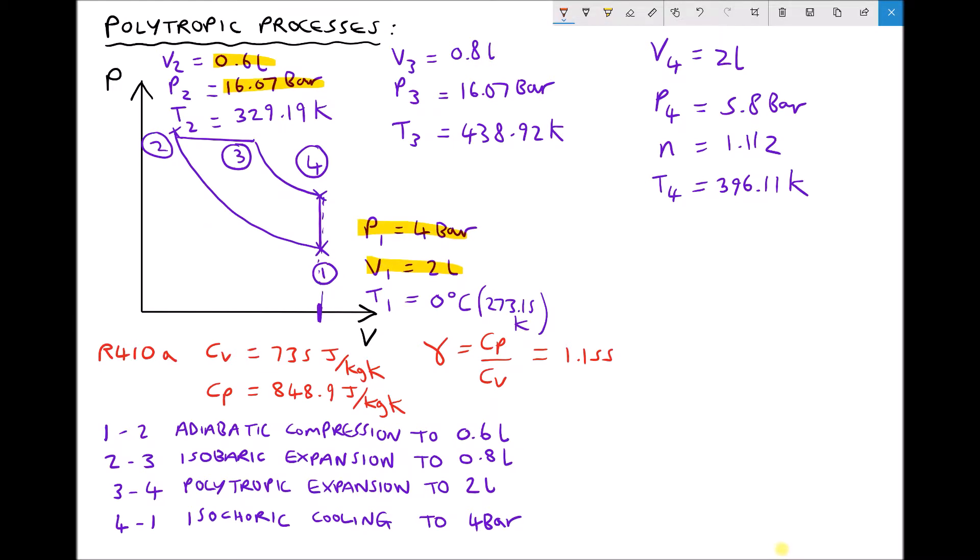Okay, so we know that when we move from position 1 to position 2 we have an adiabatic compression. And the formula for calculating the work done, W1 to 2, for an adiabatic process is P2 V2 minus P1 V1 all divided by gamma minus 1. Now we need to remember here because we want the work done in joules or SI units, we need to use our pressure in SI units and we need to use our volumes in SI units.